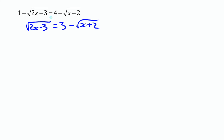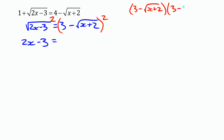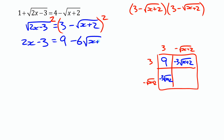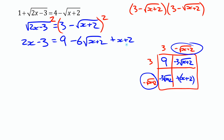At that point I can square both sides. The left side is easier — it gives 2x minus 3. The right side is a binomial, so we need to multiply it out using the box method or by writing it out. We get 9, minus 3 root of x plus 2, minus 3 root of x plus 2 — which is minus 6 root of x plus 2 — and then minus root of x plus 2 times minus root of x plus 2, which is plus x plus 2. No brackets needed there because it's a plus in front.